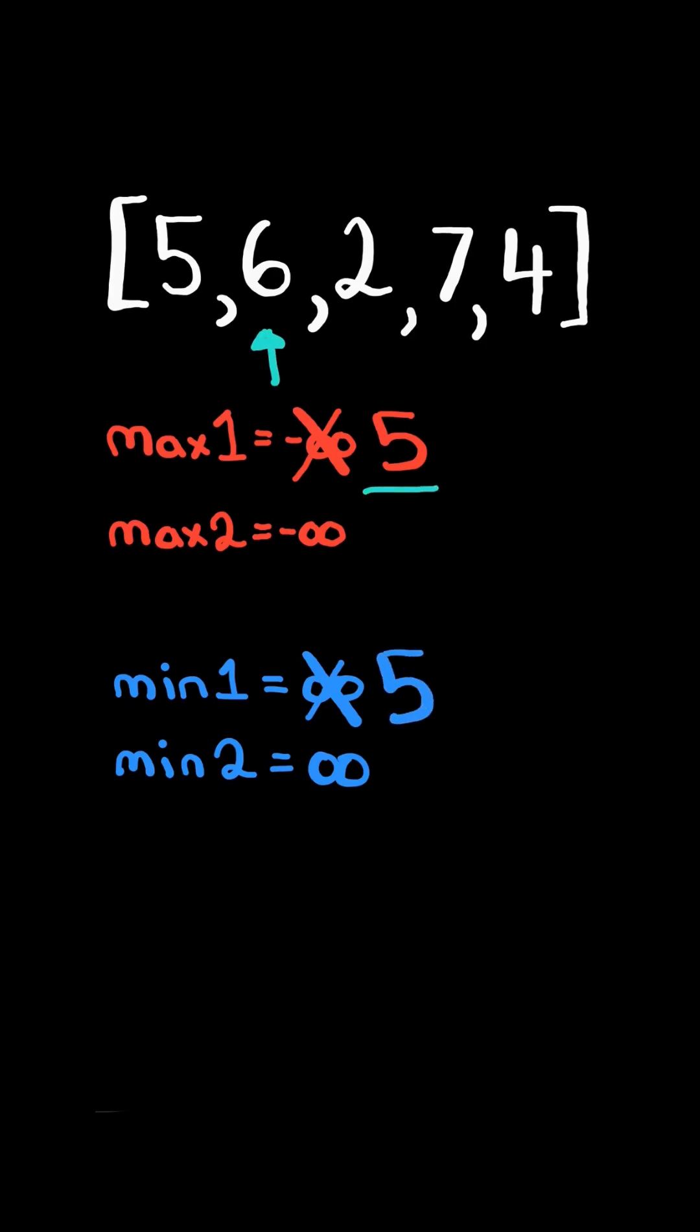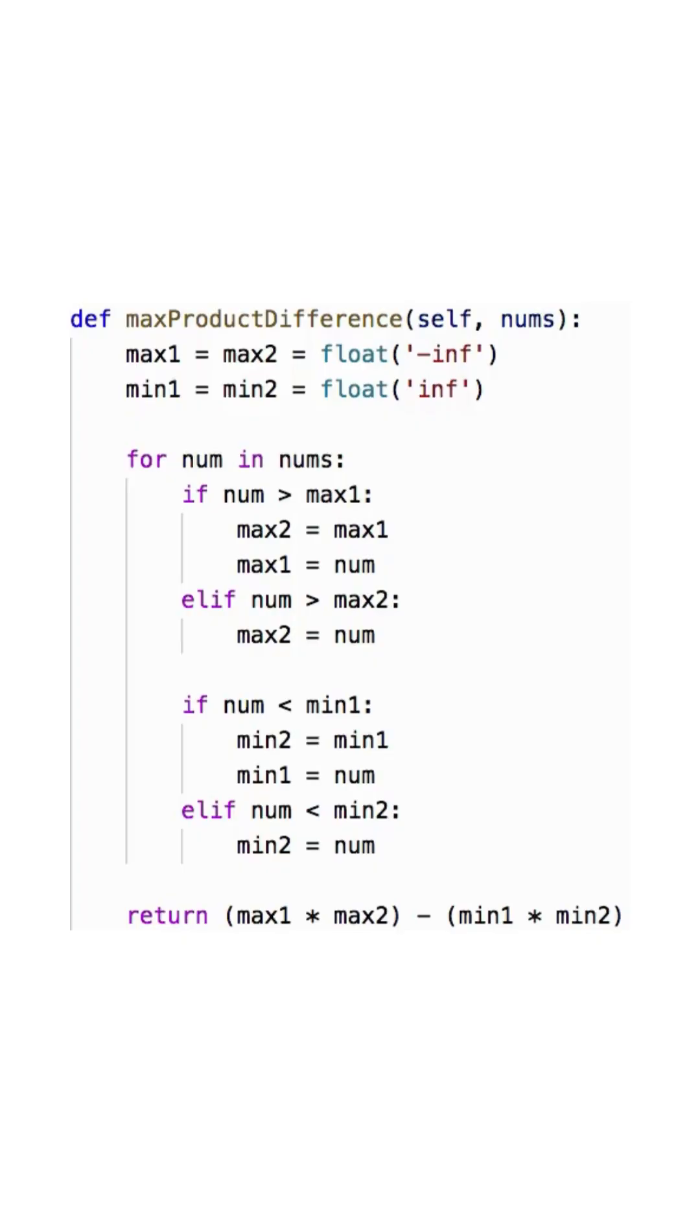Now the number is greater than max1, so we set max2 to max1 and set max1 to the new number. Now the number is not less than min1, so we do not update. And here is the code to do so.